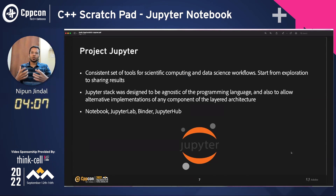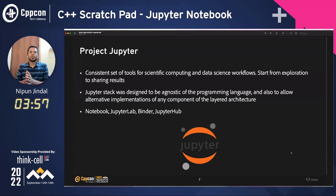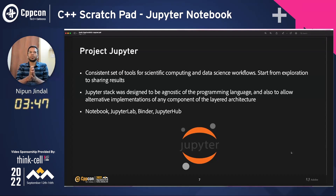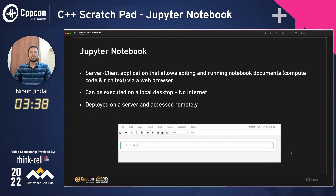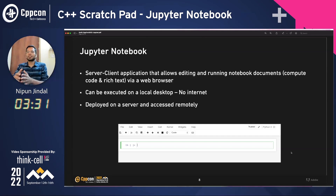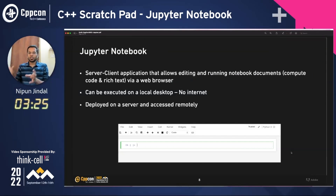Jupyter is an ecosystem which was created as a consistent tooling set for scientific computation and data science workflows. It was made for starting as an exploration and then also sharing results with other people. Jupyter's stack in itself is basically an implementation of a layered architecture where each layer can be swapped with another component. Within this Jupyter ecosystem, there are things available as Jupyter Notebook, Jupyter Lab, Binder, and Jupyter Hub.